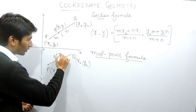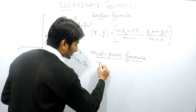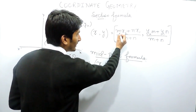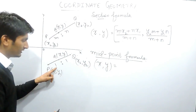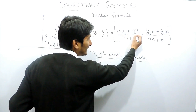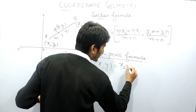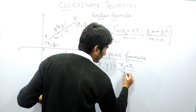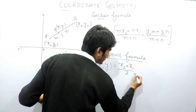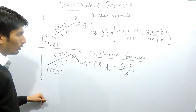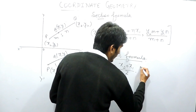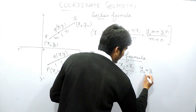Now if you want to find the coordinate of A, which is x and y, the same section formula is applied with m equal to 1 and n equal to 1. So the x-coordinate becomes 1·x2 plus 1·x1 over 1 plus 1, which equals x2 plus x1 over 2. Similarly, the y-coordinate equals y2 plus y1 over 2.